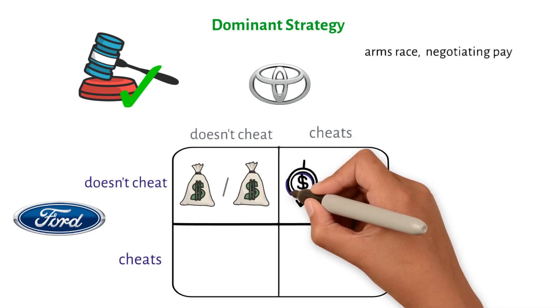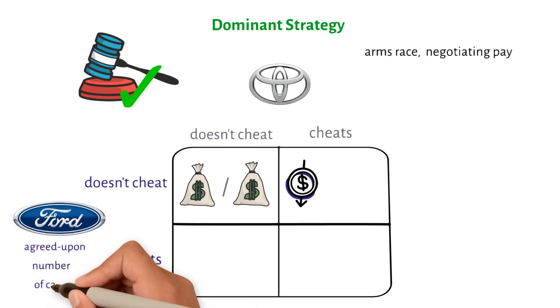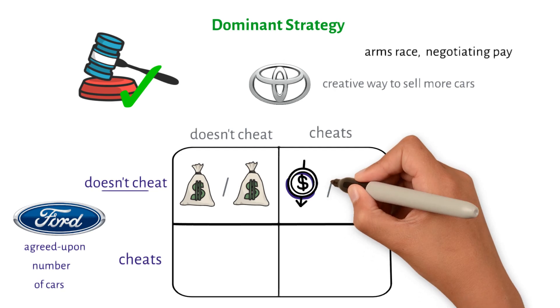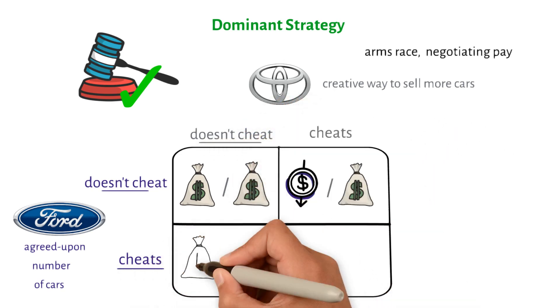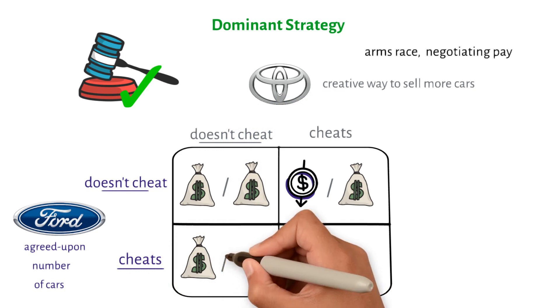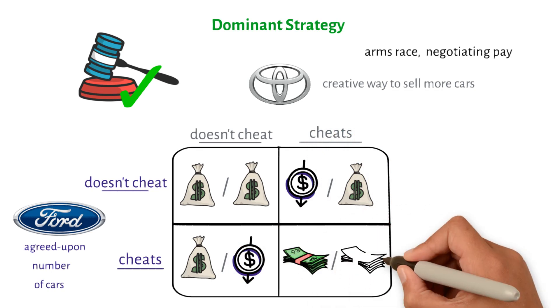Ford will lose market share to Toyota if it just sells the agreed-upon number of cars, and Toyota finds creative ways to sell more cars for less than duopoly rates. If Ford cheats and Toyota doesn't, Ford will get more of the market and make more money, while Toyota will lose. If Toyota cheats, it's better for Ford, and the same is true for Toyota.